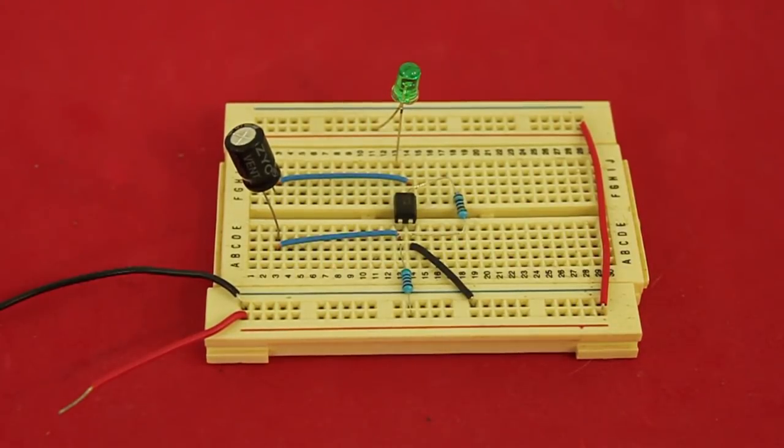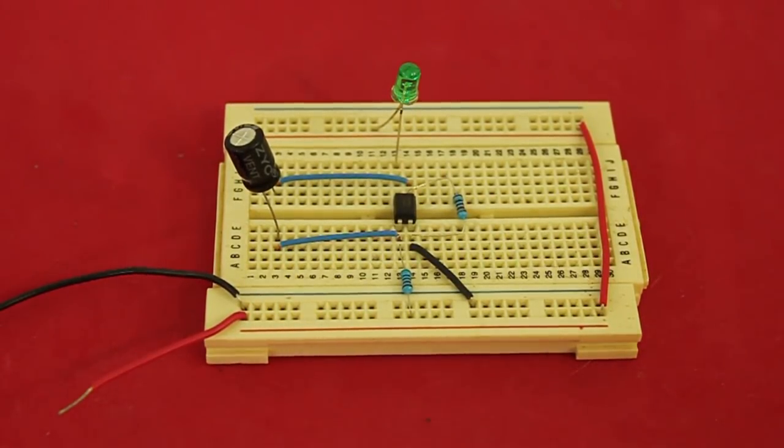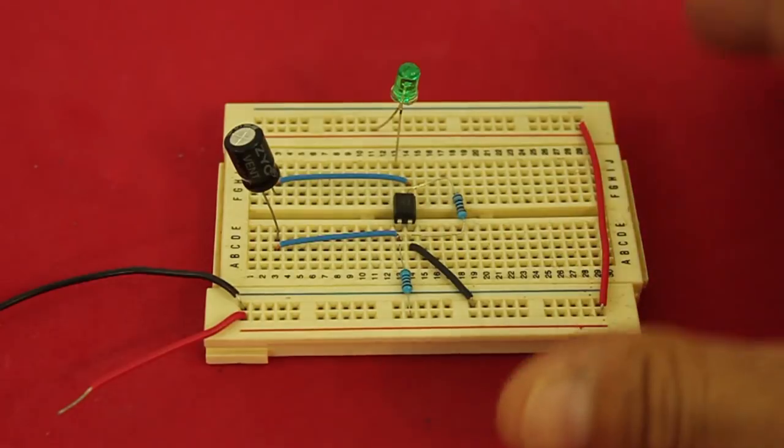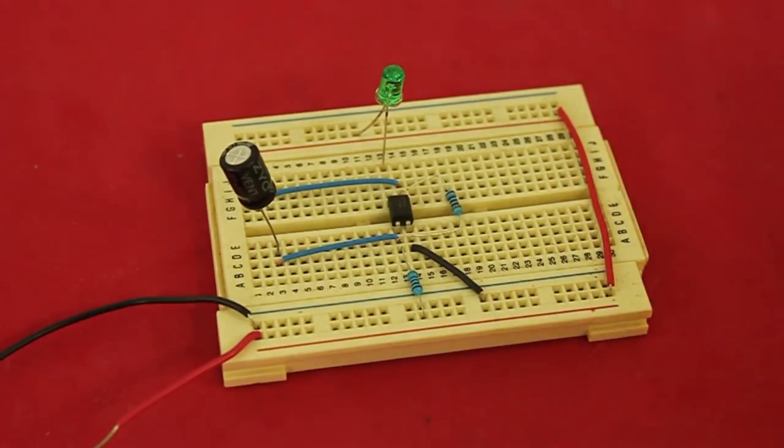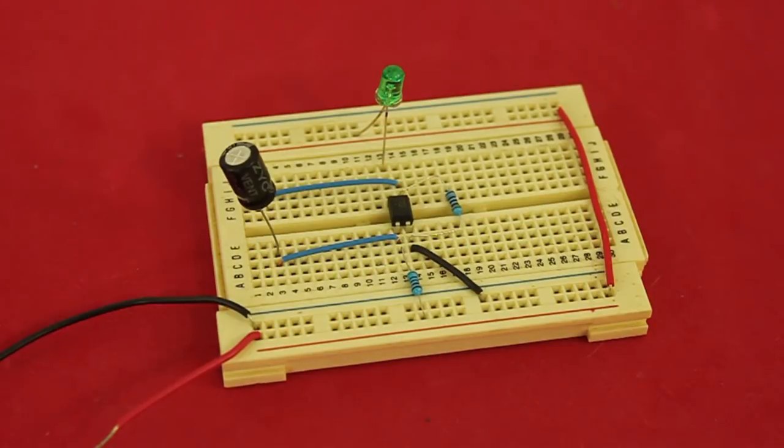Hello, welcome to Ludic Science. In this video I will show you this electronic oscillator. There are many ways of making electronic oscillators and this one in particular uses an optocoupler as the main component.